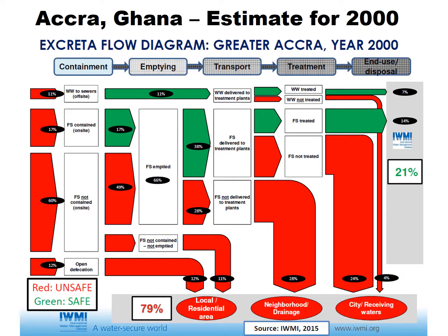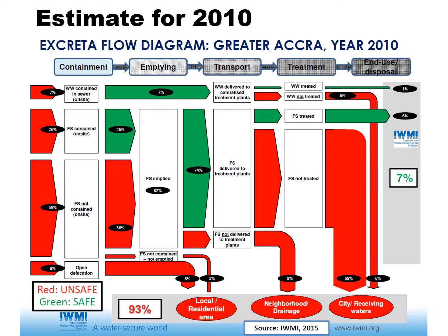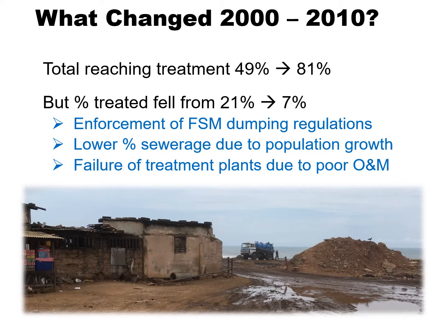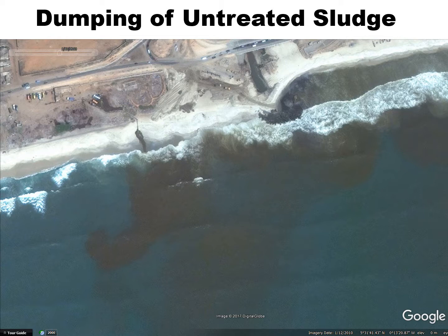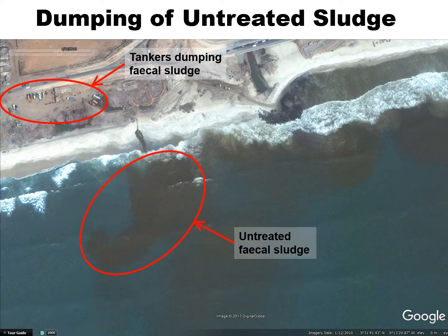Two SFDs for Accra, Ghana, for the years 2000 and 2010 were developed by the International Water Management Institute and presented at a learning event for public health engineers and environmental health staff on World Toilet Day 2015. They showed a deteriorating situation, with safely managed faecal waste decreasing from 21% in 2000 to 7% in 2010, due partly to population growth and partly to the progressive failure of the sewage and faecal sludge treatment facilities. By 2015 there was a major sanitation project for Accra already in progress. However, the strong impact of the SFDs led the Ghana Institute of Engineers to recognise public health engineers — which it had previously regarded as not sufficiently technical — and to divide its combined water and sanitation section into separate units.